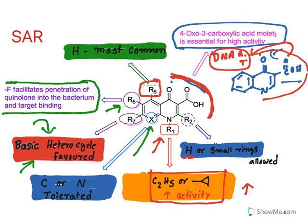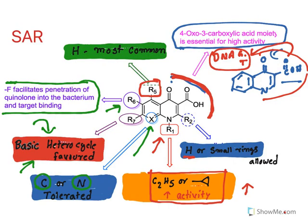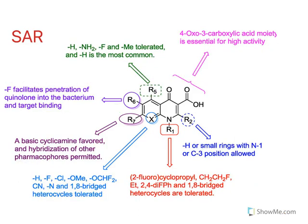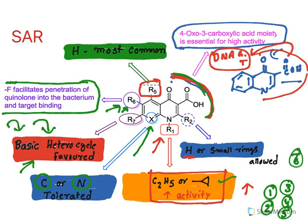At position 8 (R8), carbon or nitrogen is tolerated. Nalidixic acid is a naphthyridine derivative (nitrogen at R8), while other drugs have carbon at that position — both retain activity. To summarize the SAR: R1 — ethyl or cyclopropyl increases activity; R2 — only hydrogen tolerated; the 4-oxo and 3-carboxylic acid motif is the pharmacophore essential for mechanism of action; R5 — only hydrogen; R6 — fluorine increases activity; R7 — basic heterocyclic ring required; R8 — carbon or nitrogen tolerated.